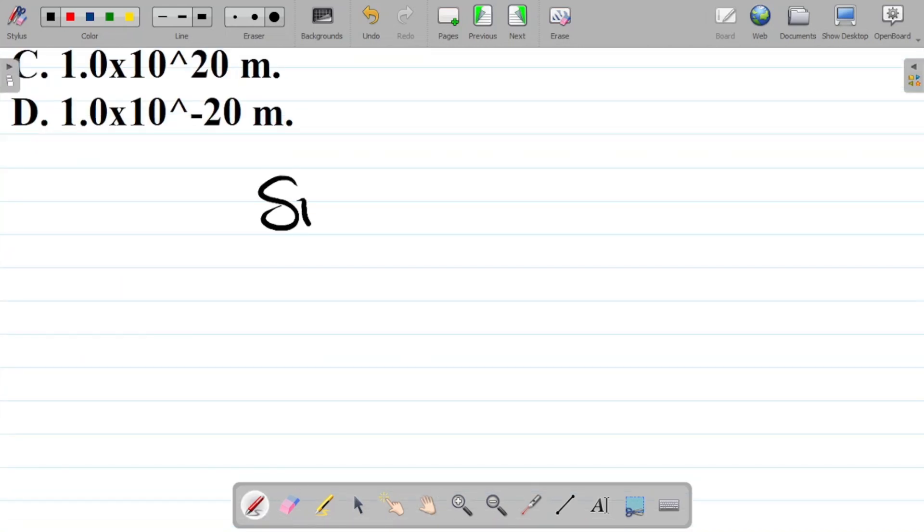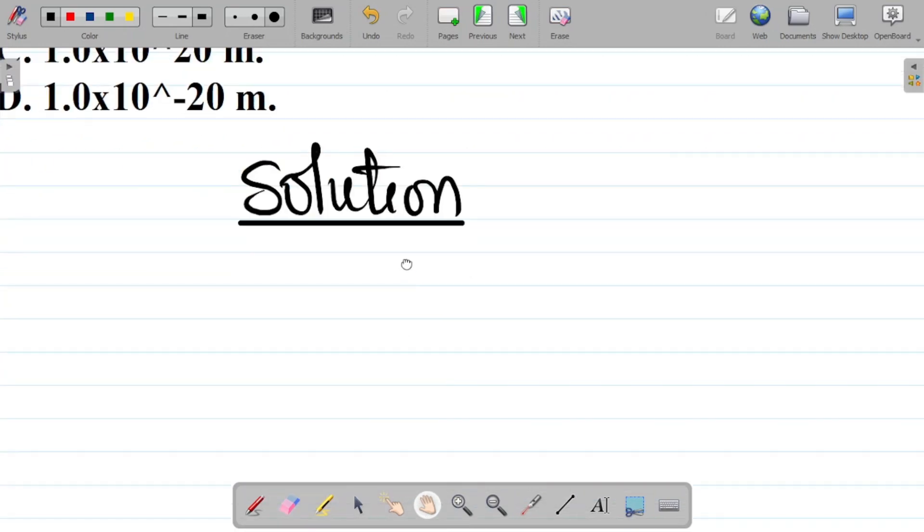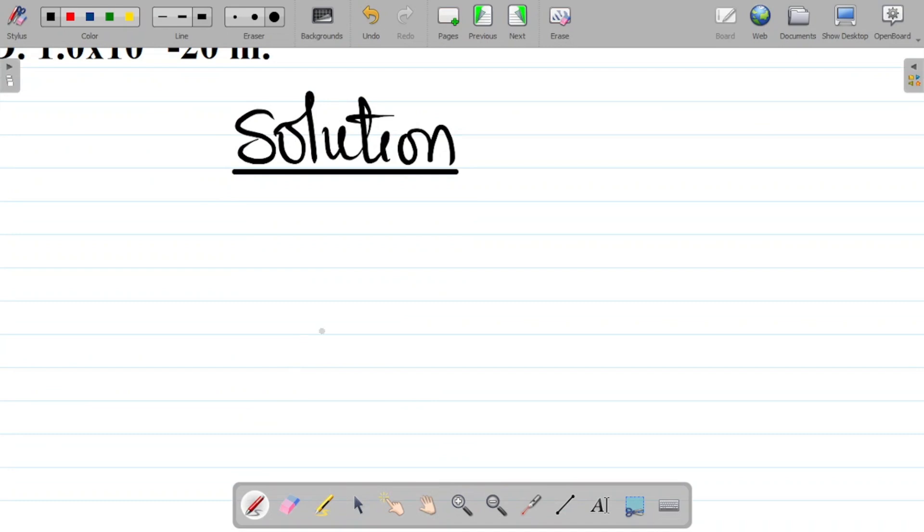First things first, the formula we use for this is from Newton's law of universal gravitation. From there we have that F is equal to G M1 M2 all over R squared.